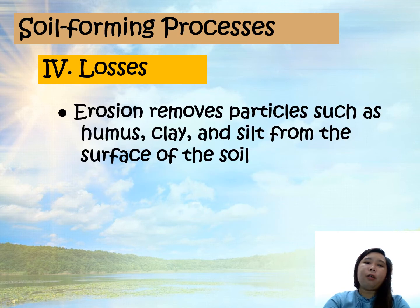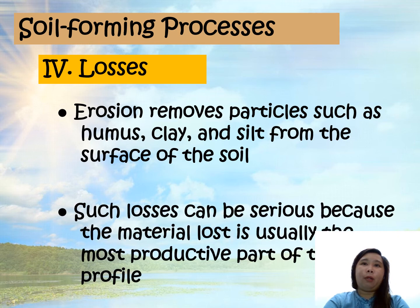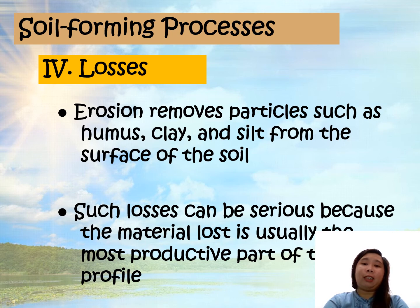Another process that belongs to losses is erosion. Erosion removes particles such as humus, clay, and silt from the surface of the soil. Such losses can be serious because the material lost is usually the most productive part of the soil profile, which is the topsoil.